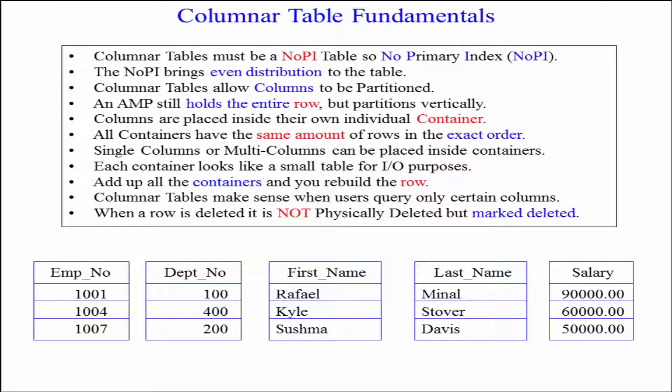All containers have the same amount of rows in the exact order. Single columns or multi-columns can be placed inside containers. Each container looks like a small table for I/O purposes. Add up all the containers and you rebuild the row.